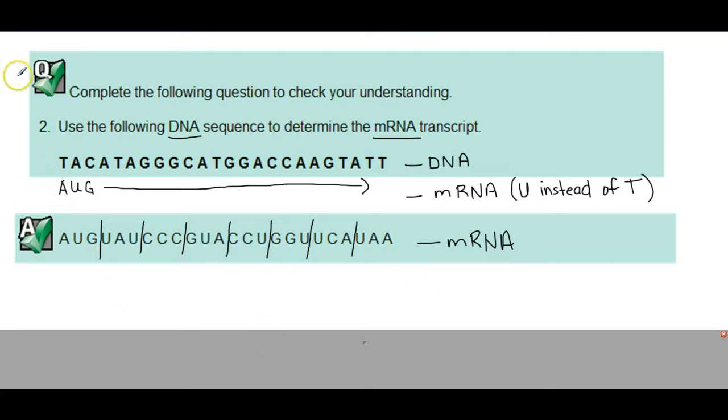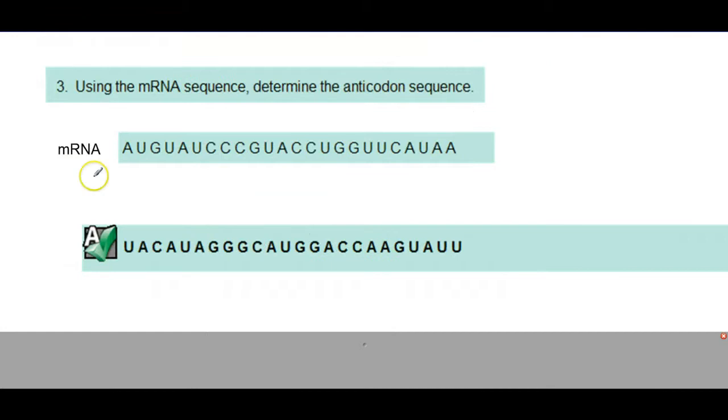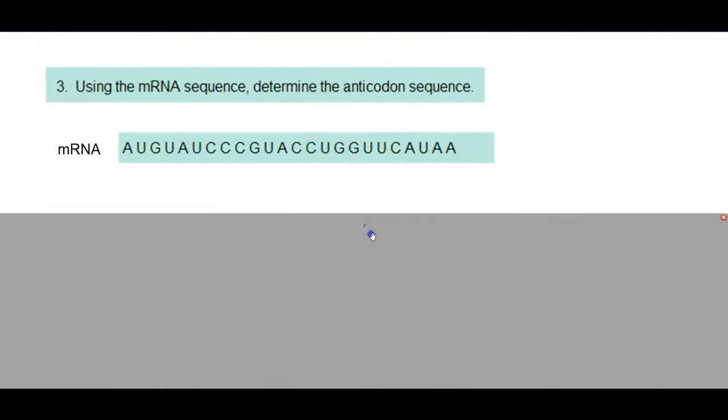So the next stage after that, we have our mRNA sequence. Cover up this answer here. So now we have our mRNA. This is the exact same mRNA that we just transcribed from the last page. What they're asking us to do now is, using this mRNA sequence, determine the anticodon sequence. Remember, a tRNA has to come in and represent what's on each set of three. So first thing you might want to do is divide this into groups of three to get started.